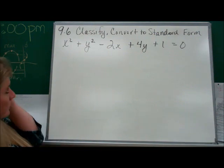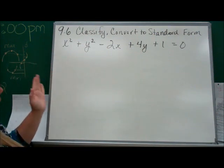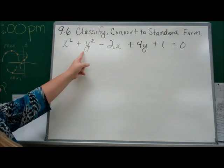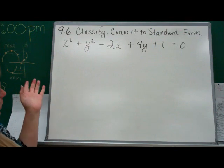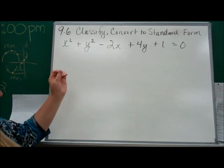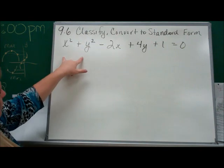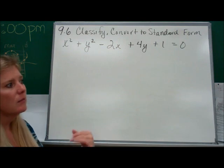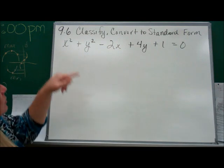Alright, first start with classifying. Okay, well, looking at the rules, remember parabolas, only one is squared, but I've got two squared. Okay, they're both squared. They're being added. So that's a circle or an ellipse. They're both being squared and they're added. And their coefficients are both one, same coefficient, that makes this a circle.